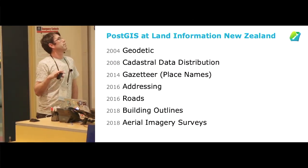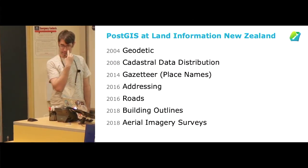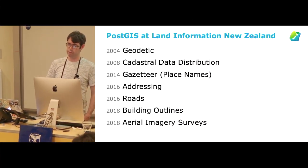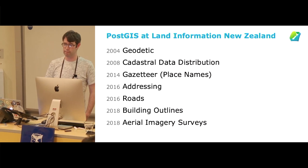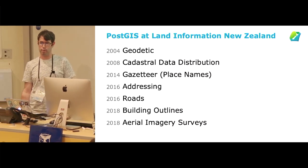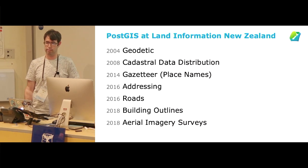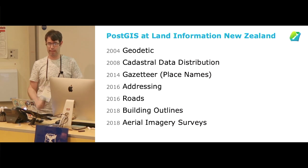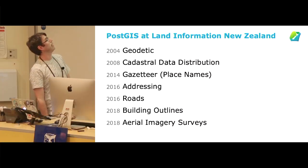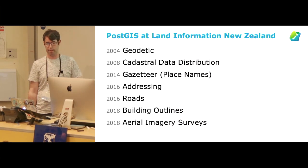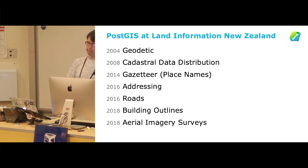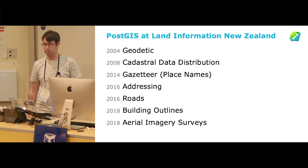Just a brief introduction. PostGIS at Land Information New Zealand has been in use for quite a long time. In 2004, the geodetic team started using PostGIS. From about 2014, we've had a number of systems which have been developed with QGIS as a front end for data manipulation, and Postgres PostGIS as the back end. It started with the Gazetteer, which is our place name dataset, and has continued through addressing and road data management, and more recently, building outlines and aerial imagery surveys.